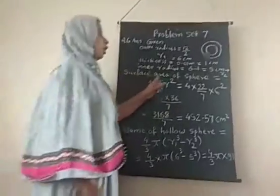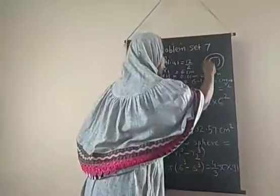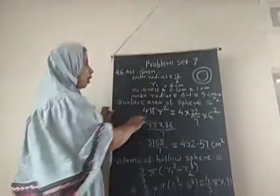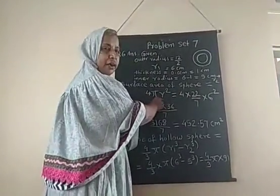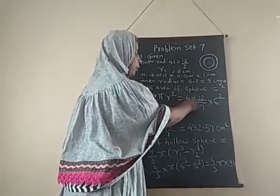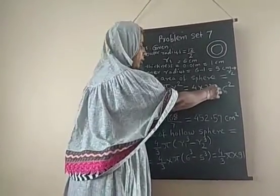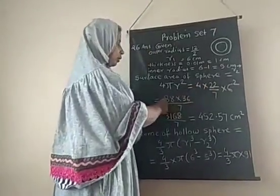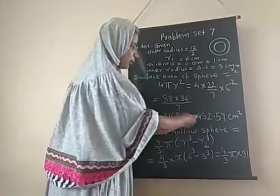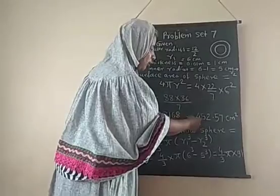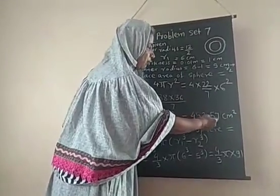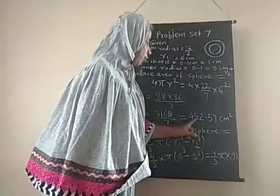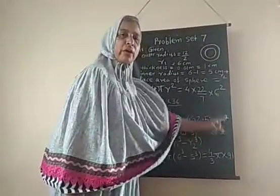Now calculating the surface area of the sphere. The formula is 4πR². Substituting the value: 4 multiplied by 22/7 multiplied by outer radius 6 squared. The final answer is 452.57 square centimeters. So the surface area of the sphere is 452.57 square centimeters.